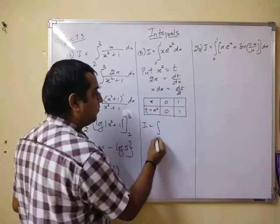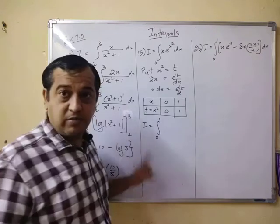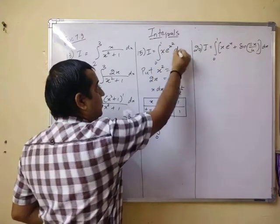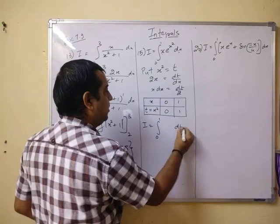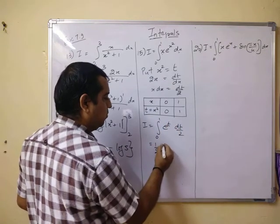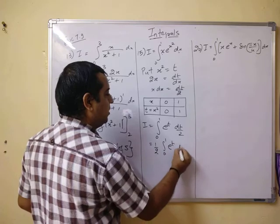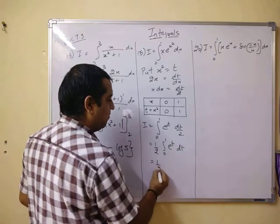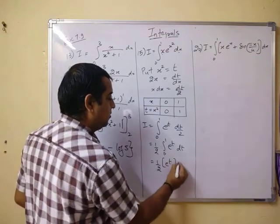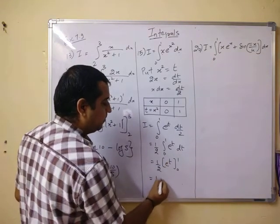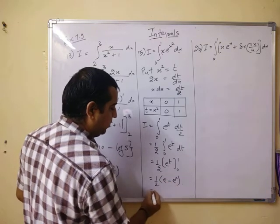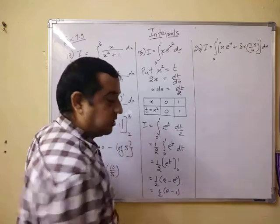Now this gives you I is equal to integral 0 to 1. This time this is 0 to 1, these are limits of t. This x dx, this turns out to be dt by 2 and e raise to x square it becomes e raise to t. So this is 1 by 2 integral from 0 to 1 e raise to t dt. This gives you 1 by 2 e raise to t. Integral of e raise to t is e raise to t. Limits 0 to 1. Apply the upper limit, you get e raise to 1 and lower limit e raise to 0 and this gives you 1 by 2, e minus 1.